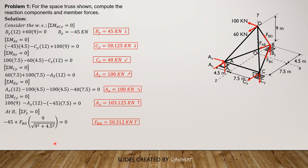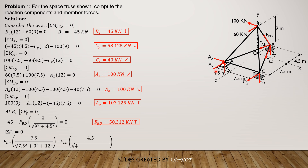FBD is equal to 50.312 kN, and it is a tension member. Then for summation of forces along X to relate FAB and FBC, equals 0. FBC times 7.5 divided by the square root of 7.5 squared plus 0 squared plus 12 squared, then minus FAB times 4.5 divided by the square root of 4.5 squared plus 0 squared plus 12 squared, equals 0. Expressing FBC in terms of FAB gives FBC equals 0.6625 FAB.